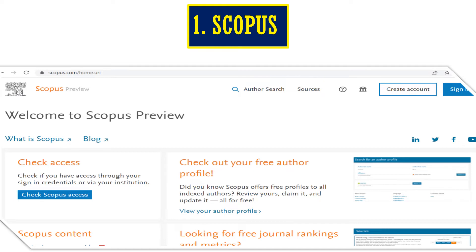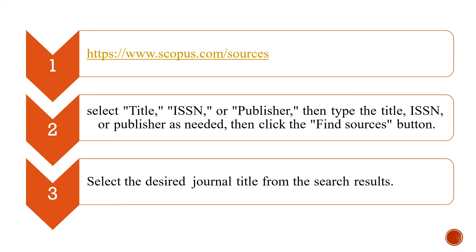The first database, which is very common and very standard, is Scopus. Once you type www.scopus.com, the front page or home page will come. After that, we need to select the title of the journal. We can type the title, or we can enter the ISSN number — that means International Standard Serial Number — or we can type the name of the publisher, and then we need to click on the Find Sources button.